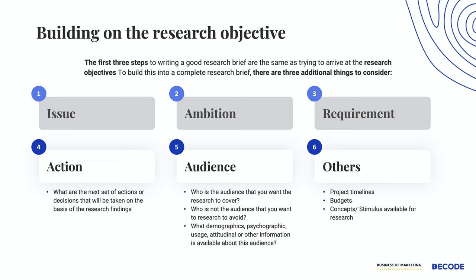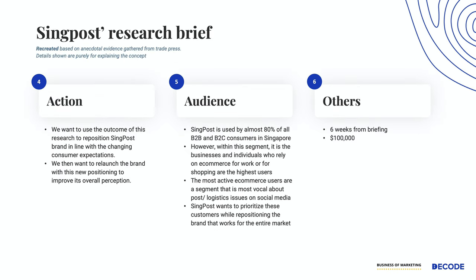The next thing to describe is the audience. Keep in mind: who is the audience you want the research to cover, who is not the audience, and what demographics, psychographics, usage, attitudinal or other information is available about this audience so that the research agency can recruit them very accurately? For SingPost, the audience section might read: SingPost is used by almost 80% of all B2B and B2C consumers in Singapore; however, it is the businesses and individuals who rely on e-commerce for work or shopping who are the highest users. The most active e-commerce users are most vocal about postal or logistics issues on social media. SingPost would want to prioritize these consumers while repositioning the brand for the entire market.